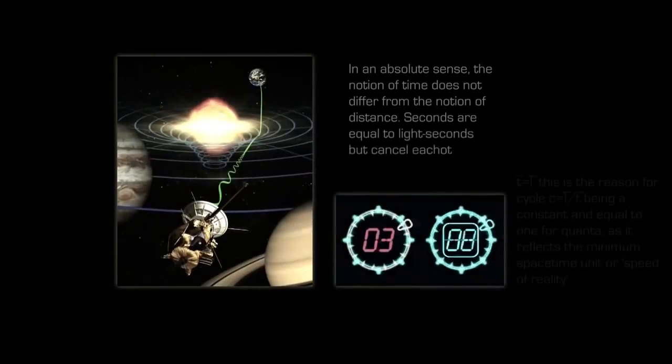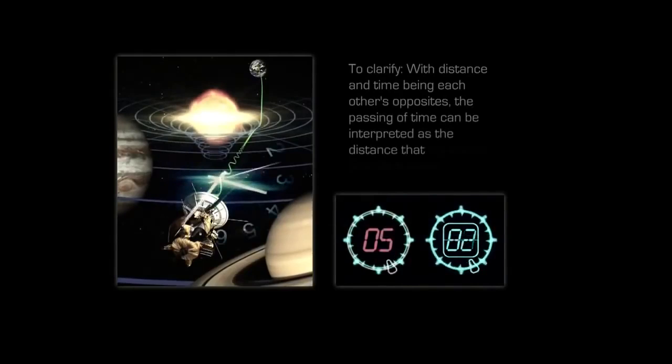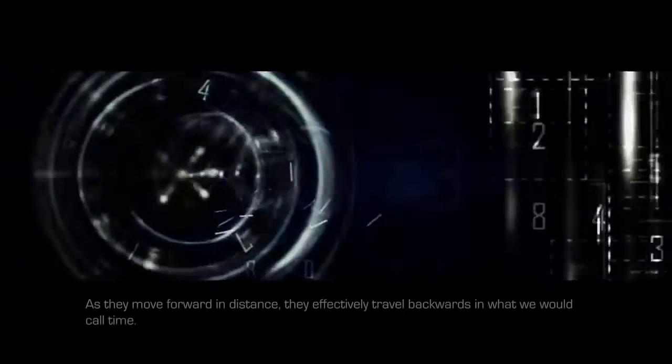To clarify, with distance and time being each other's opposites, the passing of time can be interpreted as the distance that the hands of a clock travel as they move in a direction that is opposite to time. As they move forward in distance, they effectively travel backwards in what we would call time. This is also why any single separate minimum unit of experience is always instantly annihilated within a timeless now. This understanding sets the record straight between wavefunction collapse and quantum decoherence.